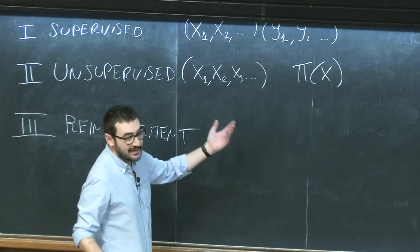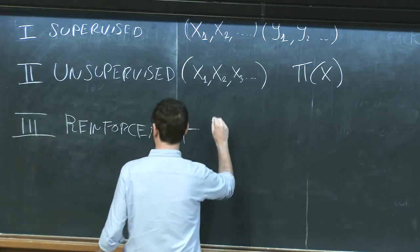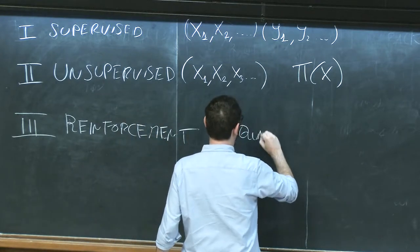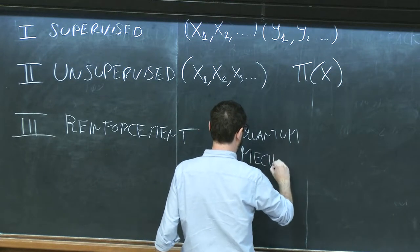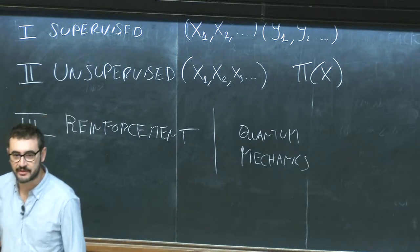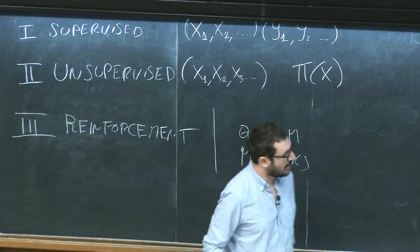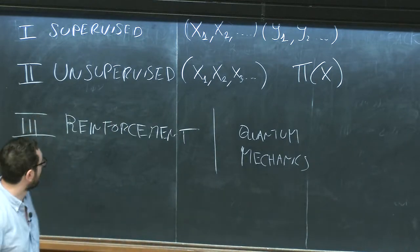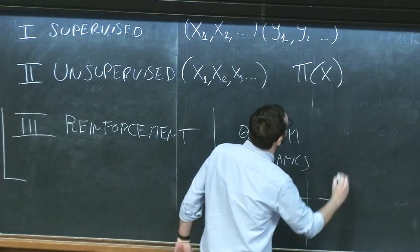In reinforcement learning you don't have samples, but at least you have a goal you want to solve. For example, I want to solve quantum mechanics — more precisely, I want to solve Schrödinger's equation. I'll show you a representation of quantum mechanics amenable for machine learning purposes, along with some code that does that.